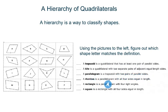A rhombus is a parallelogram with all four sides equal in length. A rectangle is a parallelogram with four right angles. And a square is a rectangle with all four sides equal in length.